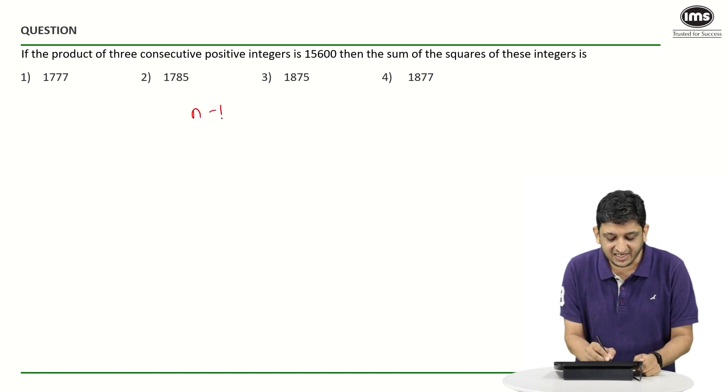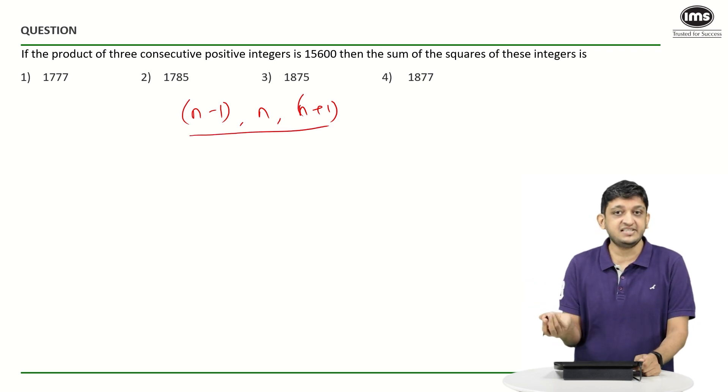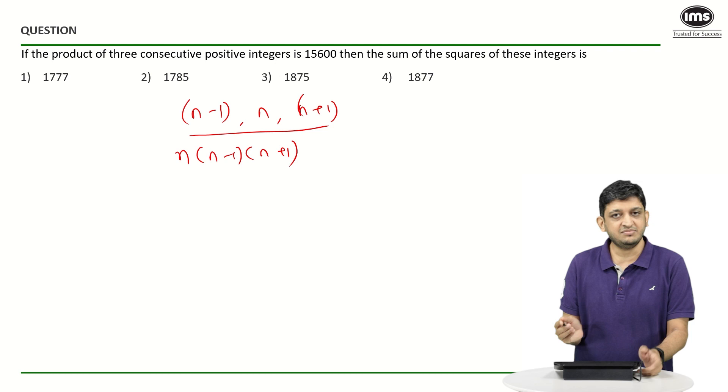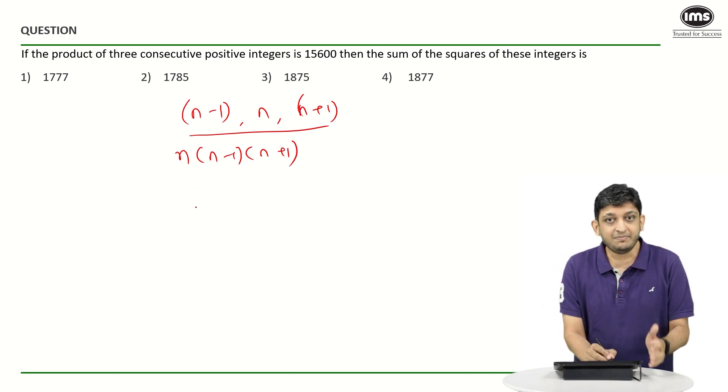Let us say that the three consecutive integers are (n-1), n, and (n+1). Now, if you are multiplying these three terms, what are you going to get as the product? You are going to get n into (n-1) into (n+1).